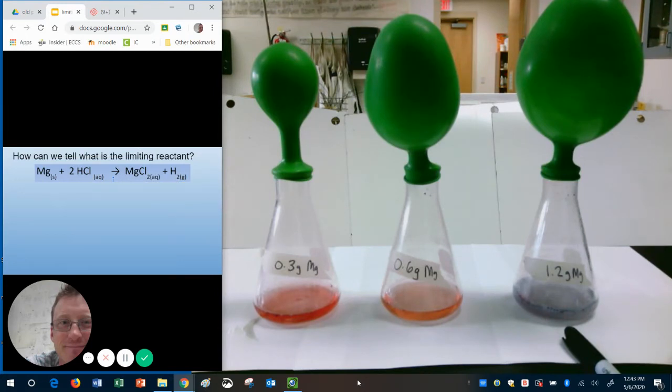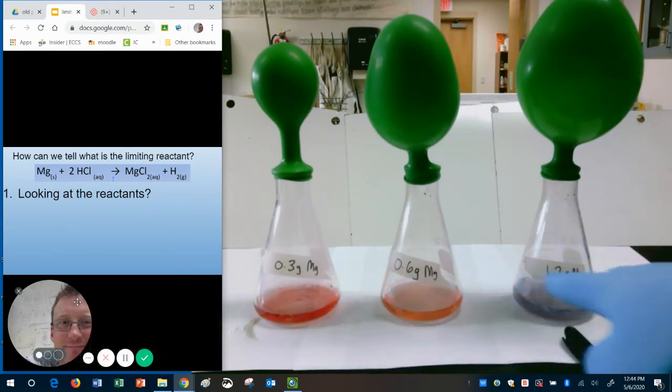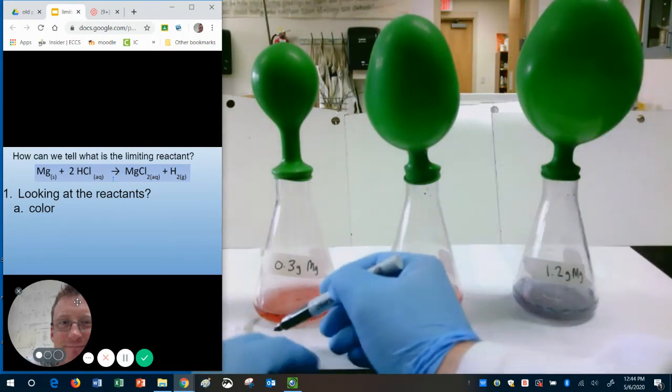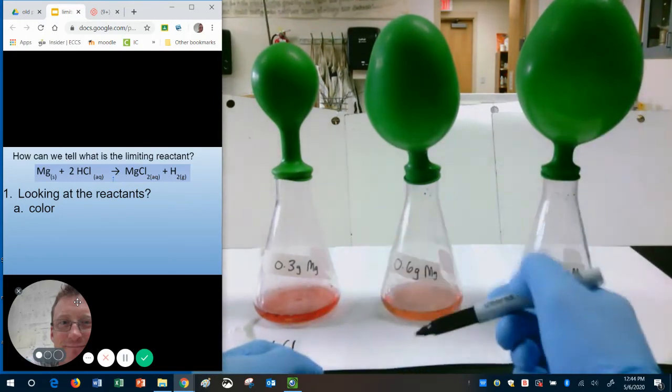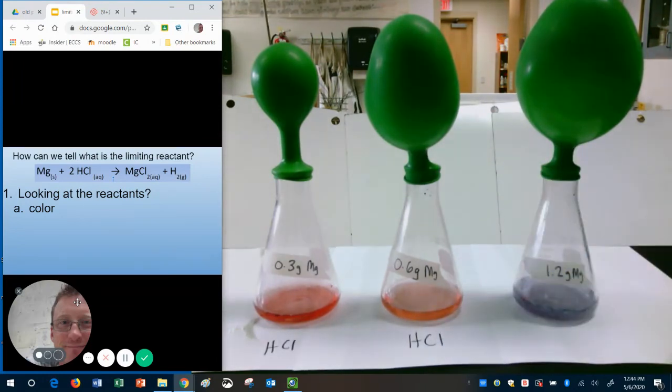So, what do we do with this? How can we tell what is the limiting reactant? Well, when we look at the reactant side, if there is HCl left over, any HCl left over in our containers, it should be pink. So, which ones have HCl? Well, the first one must have HCl in it. And the second one must also have HCl in it.